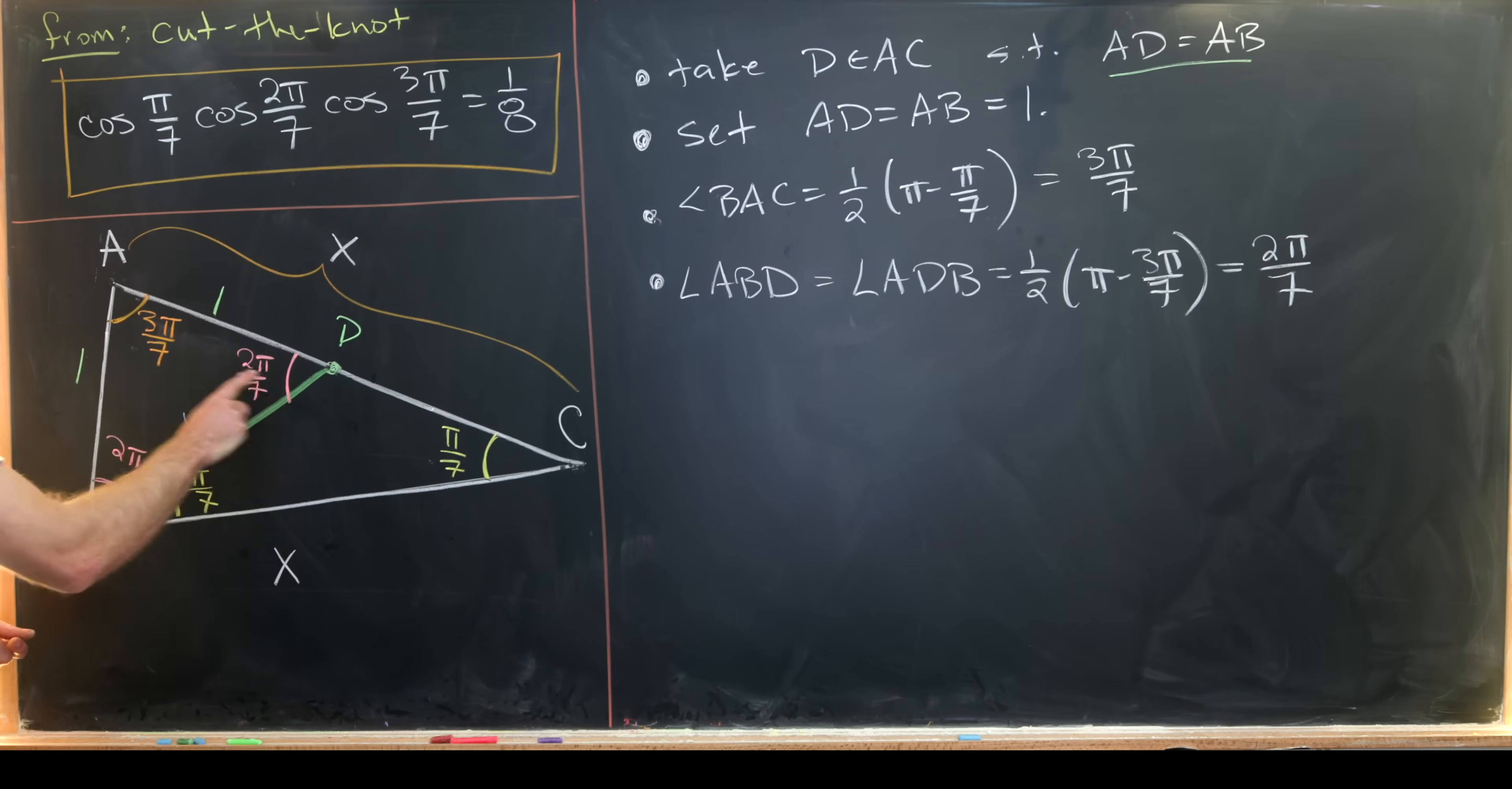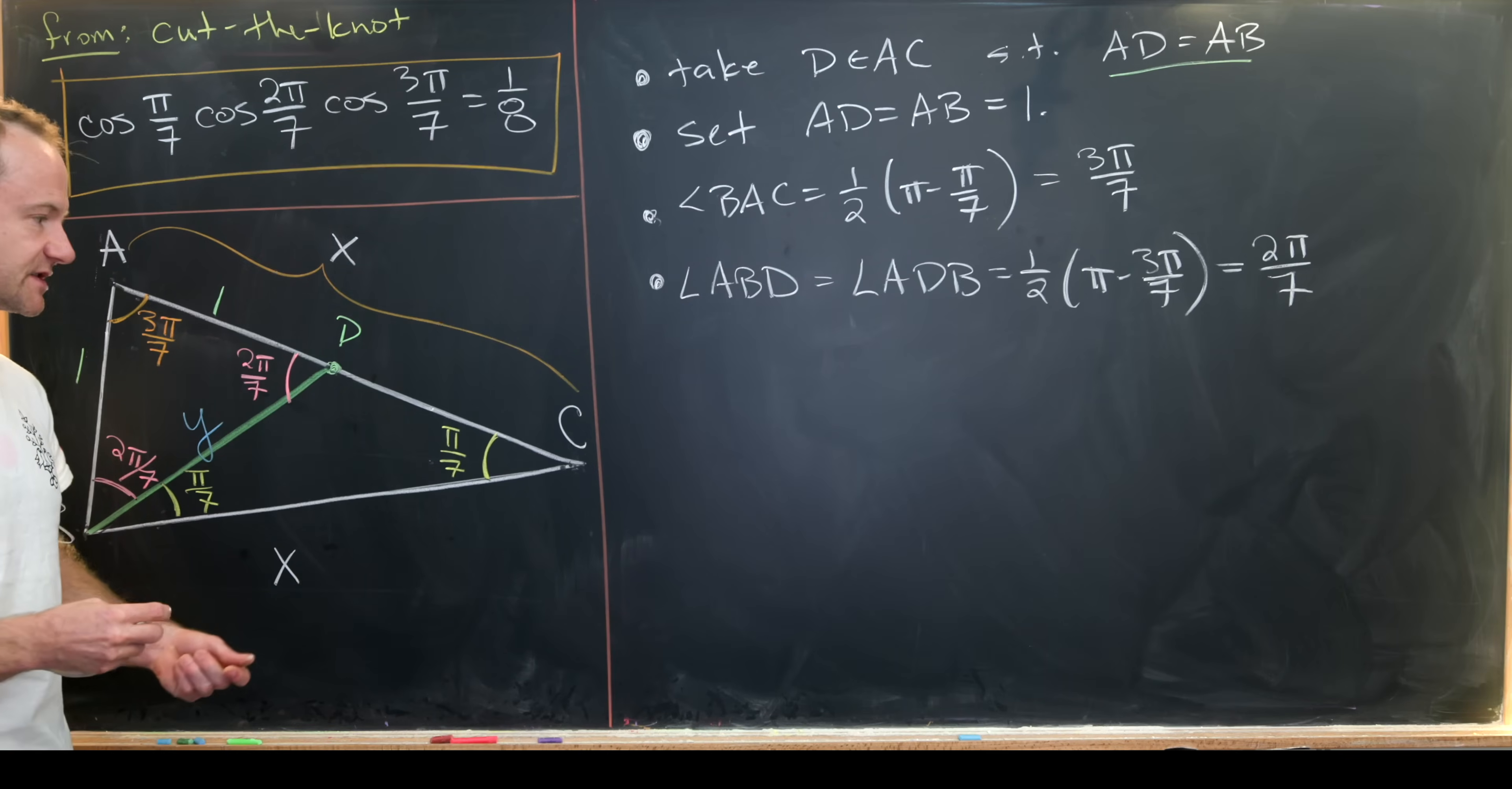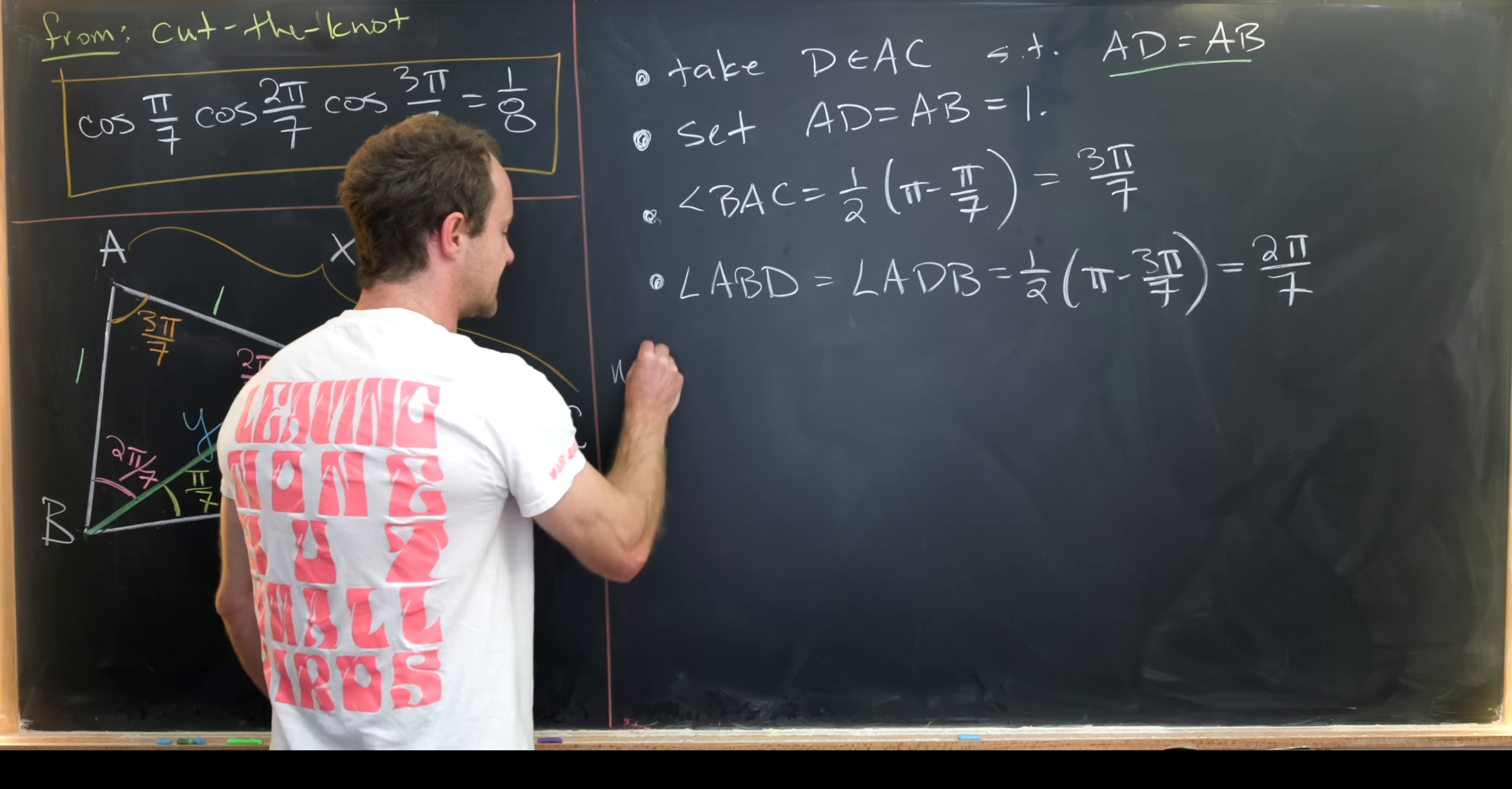And they have angle measures pi over 7, 2 pi over 7, and 3 pi over 7 which show up in our formula up here. Furthermore by the lemma that we proved regarding the cosine of angles of an isosceles triangle we can finish this thing off pretty quickly. So let's do that.